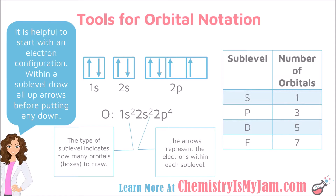I find it helpful when writing an orbital notation to start with an electron configuration. Here I have the electron configuration for oxygen — this is like a road map that I can use to help me write my orbital notation. When I look at this, the first thing I see is the 1s sublevel. From the s, I know that I need one orbital in the 1s sublevel. The superscript 2 tells me that there should be two electrons within that 1s orbital, so I would have an up arrow and a down arrow.